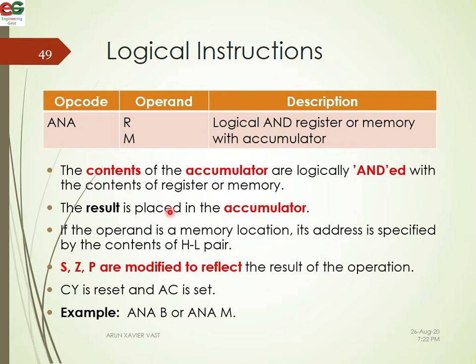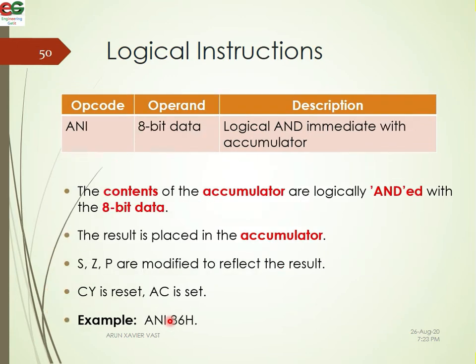The ANA instruction performs a logical AND of a register with the accumulator. R stands for register and M for memory. The result is stored in the accumulator. ANI is add immediate AND — ANI 86 ANDs the immediate 8-bit data with the accumulator content, and the result is stored in the accumulator. The corresponding binary operation is performed and the result is stored.